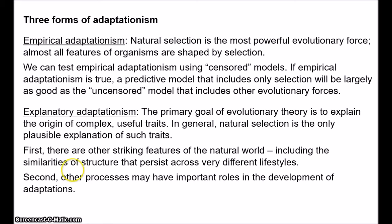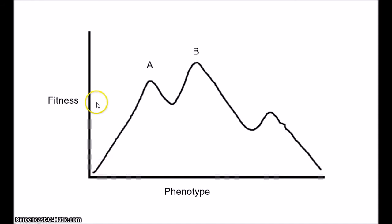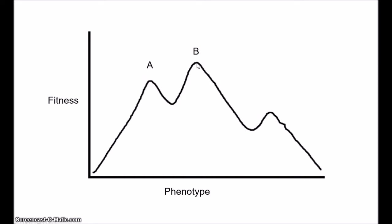A simple case is what's known as shifting balance theory. To understand this theory, it helps to visualise the adaptive landscape. On this image, the horizontal axis represents different phenotypes and the vertical axis represents the fitness of those phenotypes — higher points meaning the phenotype is fitter. We have peaks on this landscape: point B represents the fittest possible phenotype, but there's another peak at A. Natural selection acts to drive populations upwards to higher and higher fitness. So if you have a population at this point, it will get driven to phenotype A. But notice that even though phenotype B is fitter, natural selection can't move the population to that peak, because it would require going through less fit phenotypes.